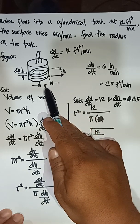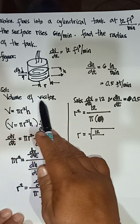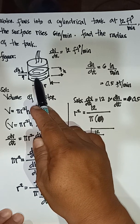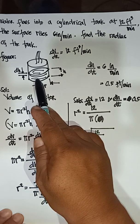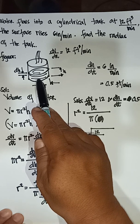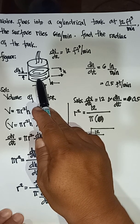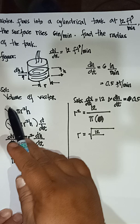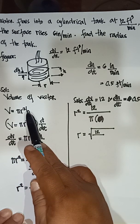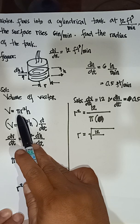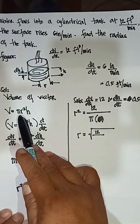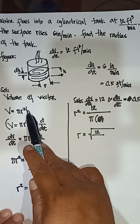Solution: the volume of water is the same as the volume of a cylindrical tank. Volume is equal to π r² times h — that is the area of the base, which is a circle, times the height.